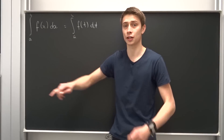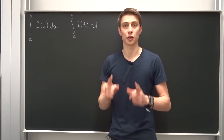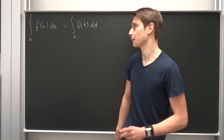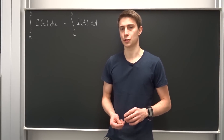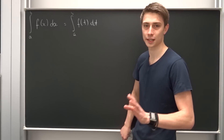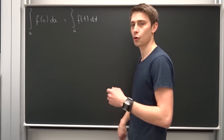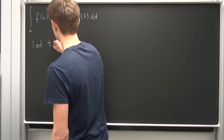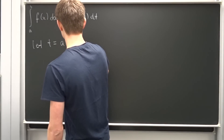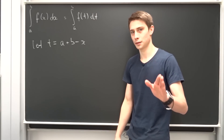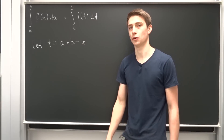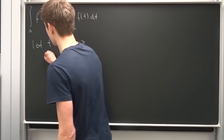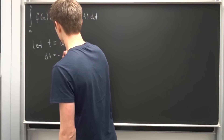It doesn't matter if there is a dog, a tree, a circle, a triangle or your mother — it really doesn't matter, it's just a name for the same thing. And now we are going to introduce our dummy variable. We are substituting: let t equal a plus b minus x. You will see why I'm using x now just to make things clear. When we differentiate that, dt is equal to minus dx.